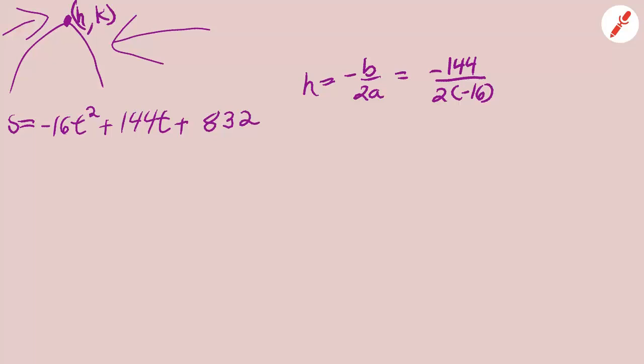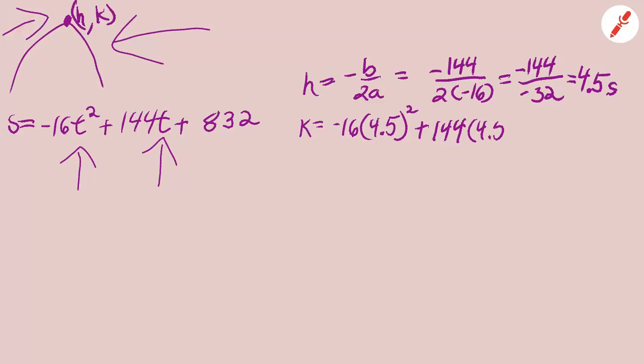So here we fill in our formula. And using a trusty calculator we come up with 4.5 seconds. That's how long it takes the rocket to get to k. Now to find out what k is you take the 4.5 seconds and you put it back in every t in the original formula. And you use your trusty calculator and you get your answer.